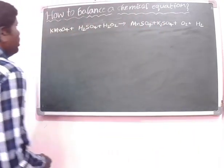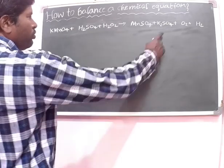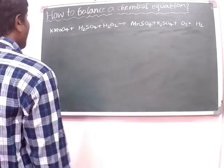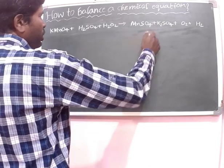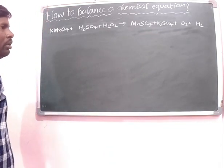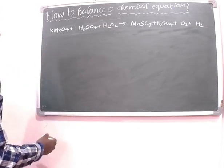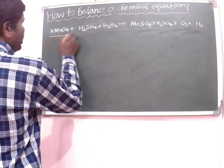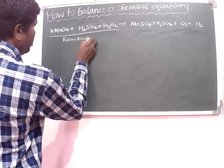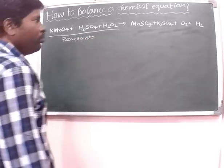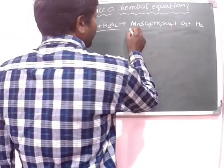See here — KMnO4 plus H2SO4 plus H2O2 gives us MnSO4 plus K2SO4 plus O2 plus H2. Potassium permanganate plus sulfuric acid plus hydrogen peroxide gives us manganese sulfate plus potassium sulfate plus oxygen plus hydrogen. The left-hand side compounds are the reactants, and on the products side we have manganese sulfate plus potassium sulfate plus oxygen plus hydrogen.